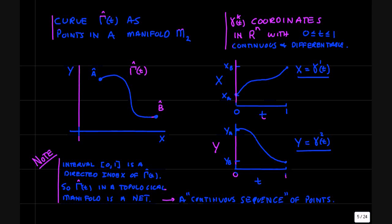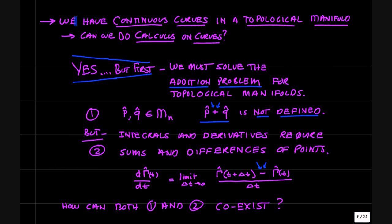So we have continuous curves on this topological manifold. Now we have the question, can you do calculus on these curves? It sounds like a good bet. You can do derivatives on those coordinate functions, the gamma k. And so you should be able to do derivatives and integrals that make sense in the manifold itself. But there's a tricky point here. The answer is yes, but there is a tricky point in topological manifolds. We have to solve the addition problem in order to make these definitions in calculus make sense.